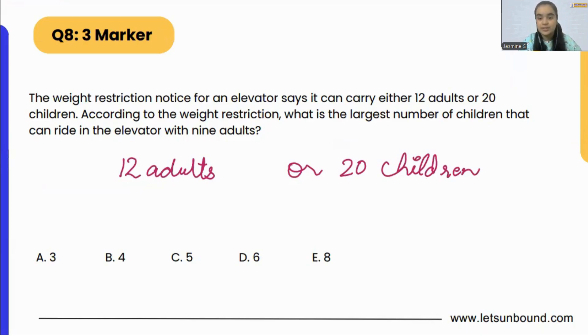According to the weight restriction, what is the largest number of children that can ride in the elevator with nine adults? With nine adults, how many children can be there in the elevator maximum number?